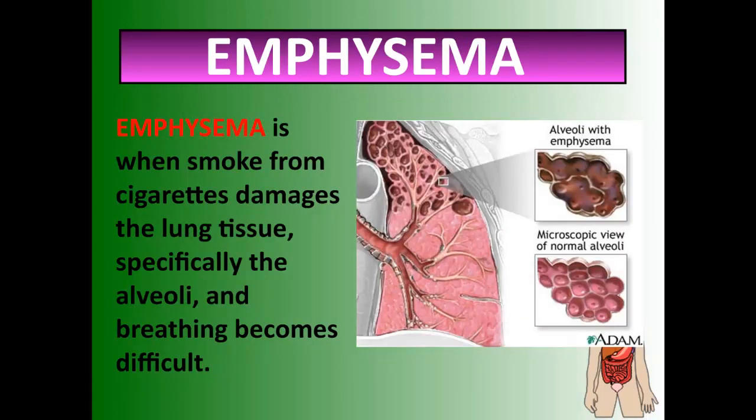Emphysema is caused by smoking. The smoke from cigarettes physically damages lung tissue and targets the alveoli. If those alveoli become damaged or destroyed, there's no gas exchange happening. When you take a breath in, nothing's happening — air comes in but doesn't stay in the body. People with emphysema can't even go outside because cold air prevents them from breathing. The alveoli are destroyed, making breathing very difficult.